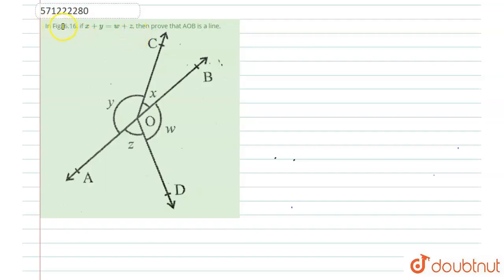Hello everyone, let's see the question. The question says in figure 6.16, if x plus y is equal to w plus z, then prove that AOB is a line. So we have to prove that AOB is a line.